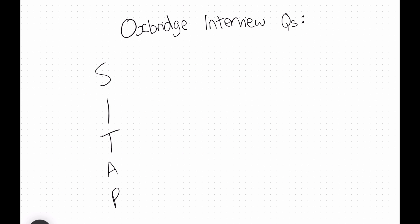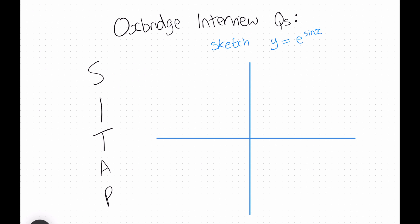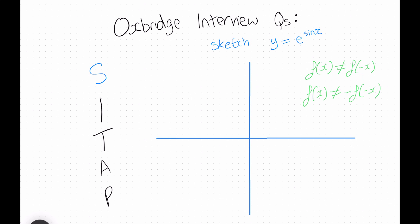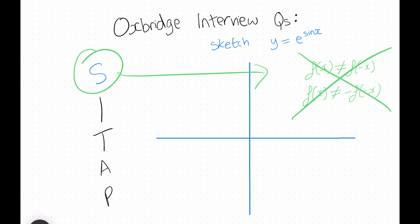Now we're going to move on to some Oxbridge interview graph sketching questions to show you how to implement this in practice. Say we were asked to sketch the graph of y equals e to the sine x. Let's go through our steps in order. Starting with S for symmetry, we can quickly check that the function isn't odd nor even. However, since there's a sine x term within the function and sine x is periodic, the graph will probably repeat itself.